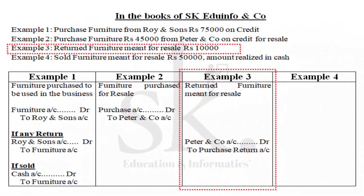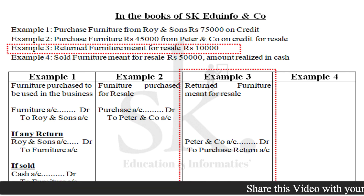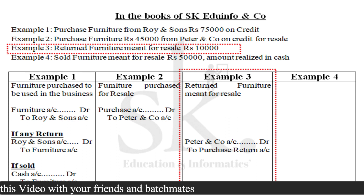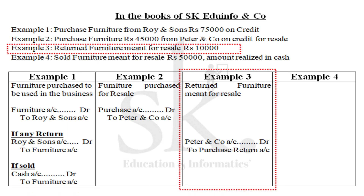Example three: return furniture meant for resale, Rs. 10,000. Since this furniture was previously purchased for resale and belongs to that resale category, we pass the entry: Peter and Co. Account Debit to Purchase Return. Comparing with Example 1, where returning furniture used in the business was credited to furniture account — in Example 3, since the furniture was purchased for resale and considered part of goods, the return is recorded as purchase return.